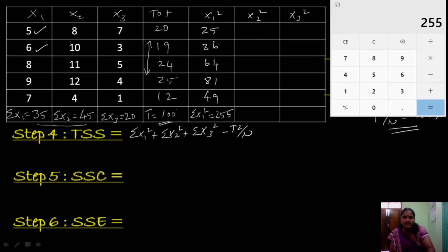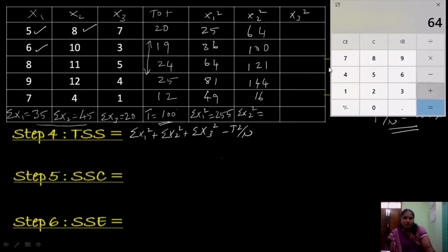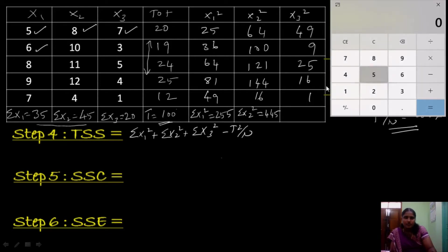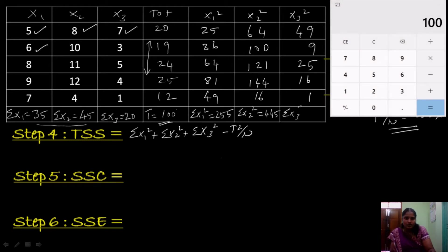Next, we calculate x2 squared: 8 squared is 64, 10 squared is 100, 11 squared is 121, 12 squared is 144 and 4 squared is 16. Adding all these values we get sigma x2 squared as 445. And for x3: 7 squared is 49, 3 squared is 9, 5 squared is 25, 4 squared is 16 and 1 squared is 1. Adding these values — 49 plus 9 plus 25 plus 16 plus 1 — we get sigma x3 squared as 100.